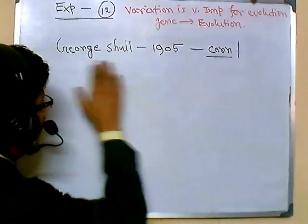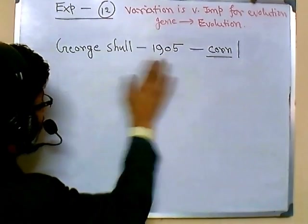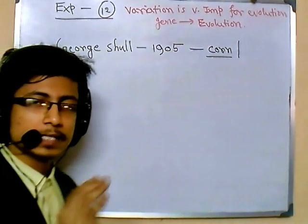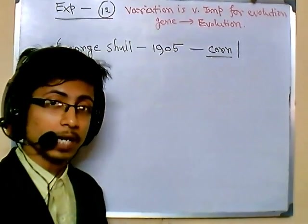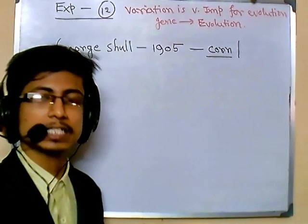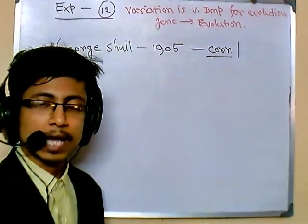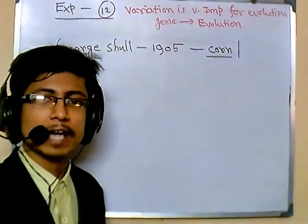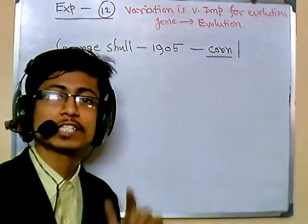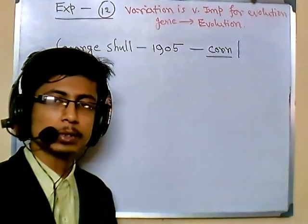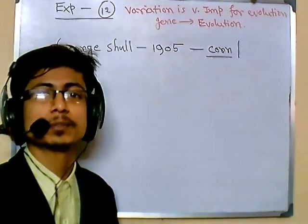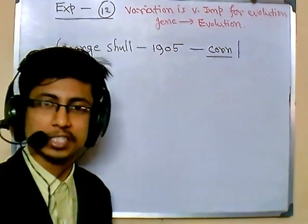In the last experiment of George Shull, we saw that variation is important and that variation comes through genetic recombination. Due to this variation, evolution becomes easier and easier.